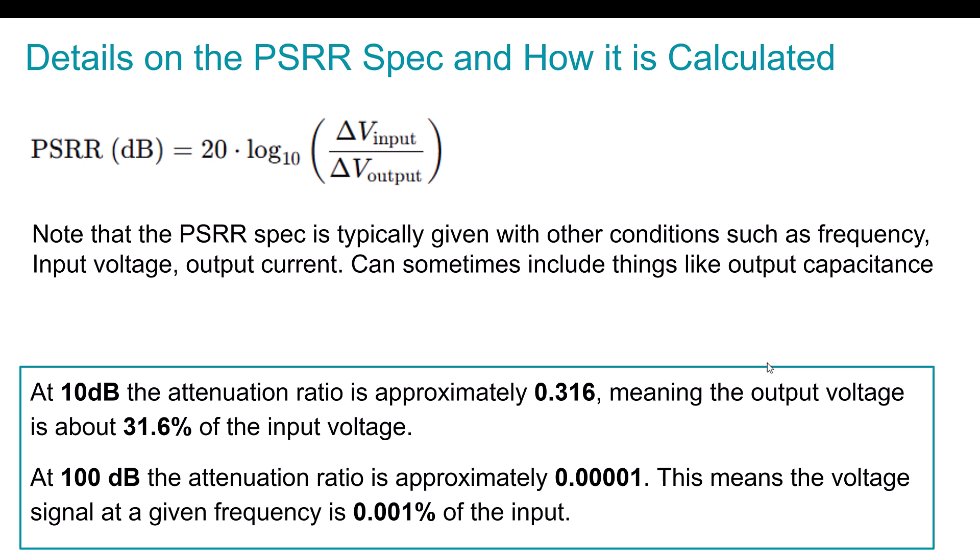Also, you typically see it done at different input voltages. What is the output current when the test is done? Typically, the higher the output current, the less PSRR you'll get, right? And just as an example, I'm kind of showing like, okay, if you have a rejection spec of 10 dB or an attenuation ratio of 10 dB, that means you're going to get about 30 some percent of that signal out. If you have at 100 dB, then you're getting barely any of it out, right? So it ranges, and this is a logarithmic, so a non-linear type way to show a spec.